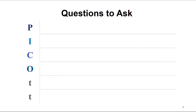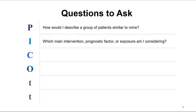When thinking about converting your question into the PICO format, think about how you would describe a group of patients similar to yours. Think about things such as age, sex, geographic location, and specific characteristics of your patient that you view as important. As for I, think about your main intervention or your prognostic factor or exposure. Think about what is the management strategy for your patient and what diagnostic test or exposure you are interested in.